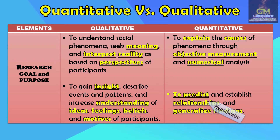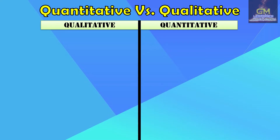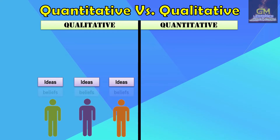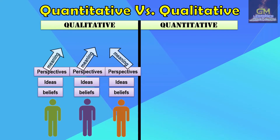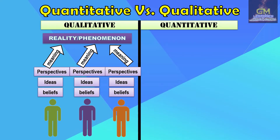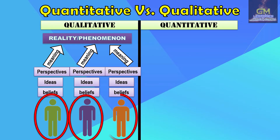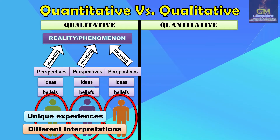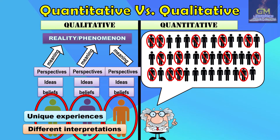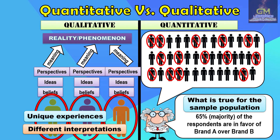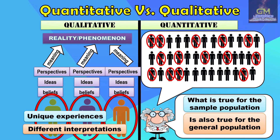To predict and establish relationships means to hypothesize — to come up with a particular idea that would be proven true or not at the end of the research. The main goal of qualitative research is to consider how each of the ideas, beliefs, and perspectives of the participants contribute to giving meaning or explanation to a particular reality or phenomenon. Since each individual has unique experiences, they might have different interpretations, so results are not truly generalizable. Whereas in quantitative research, the main goal is to explain reality based on numeric data, and whatever is true for the sample population, as long as proper statistics is applied, may also be considered true for the general population.